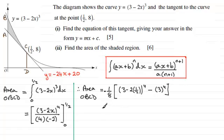And what does that come to? Well, we've got minus 1 eighth here, and 2 times 1 half is 1. 3 minus 1 is 2. 2 to the power 4, well that's going to be 16. And then we've got minus 3 to the power 4, which is 81. And that comes out at 65 over 8. 65 eighths. It's an area, so I'm just going to write unit squared. Okay, well that's the area O, B, C, D.